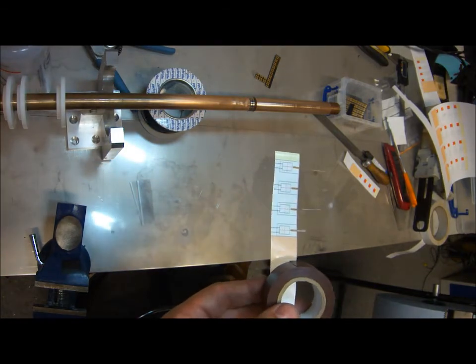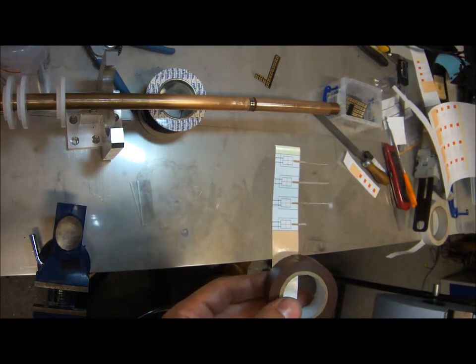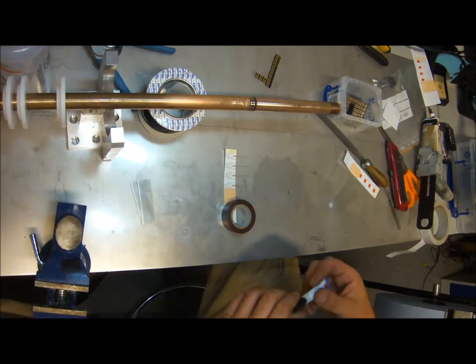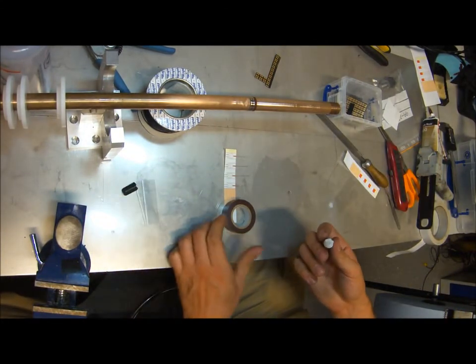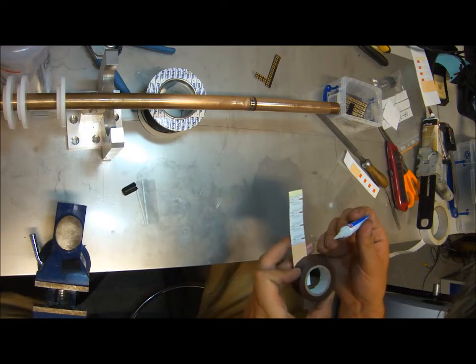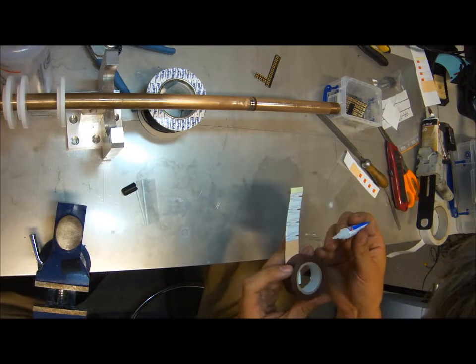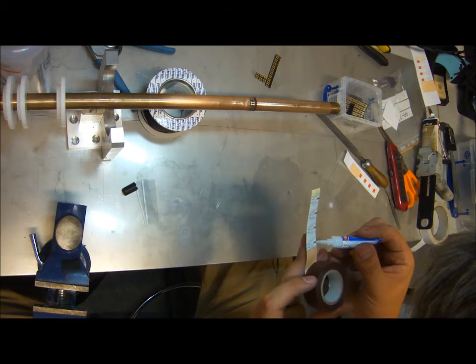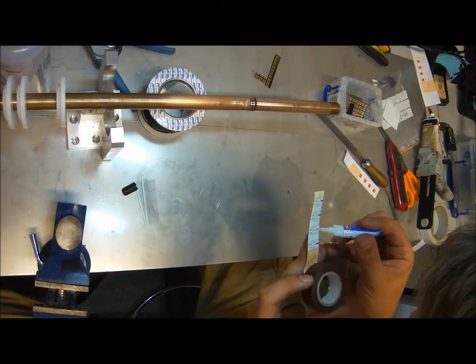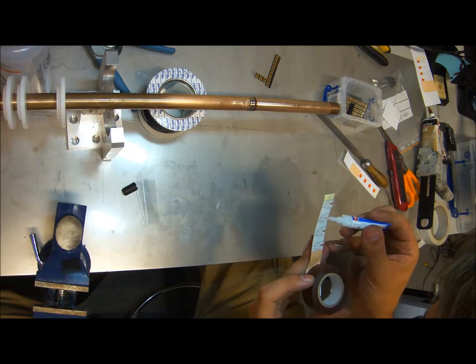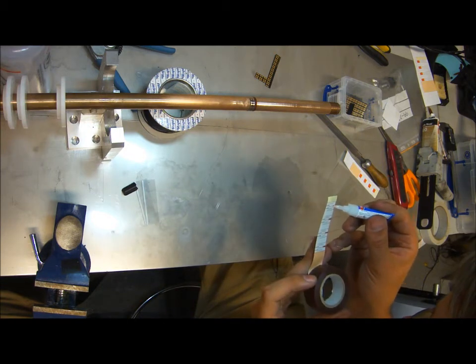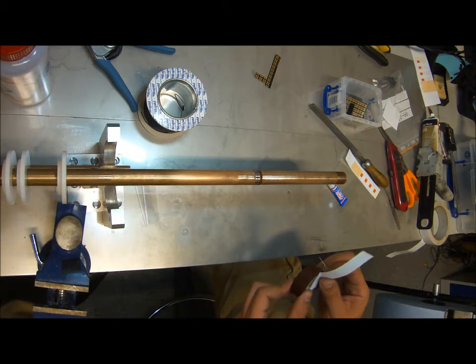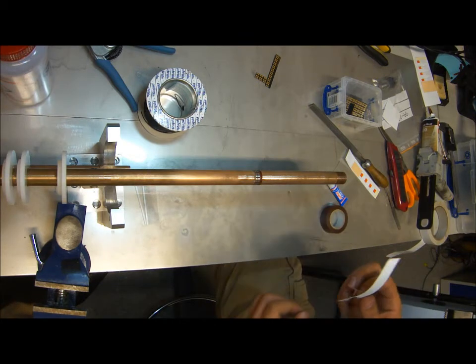Once you've done that, you can then start to attach the string gauge. Now that you've measured this distance, you can start with the gluing. Start putting a very small amount of super glue on each of the string gauges, and you can now start attaching the gauges.